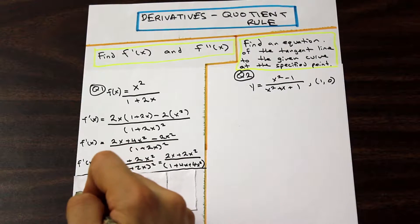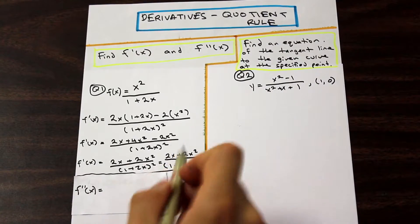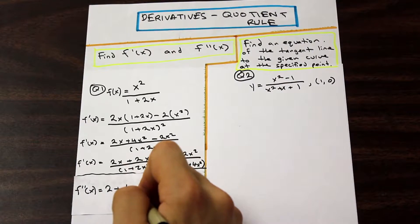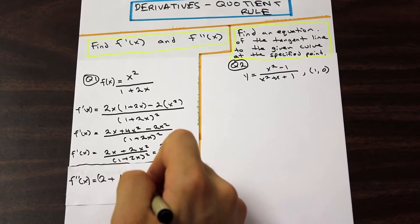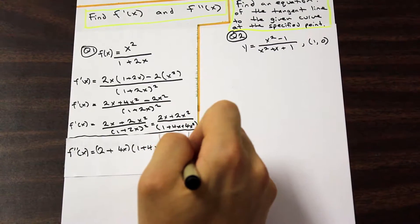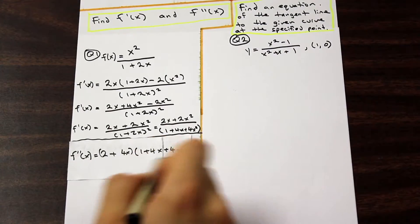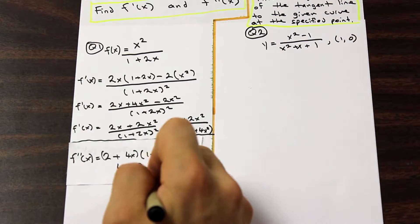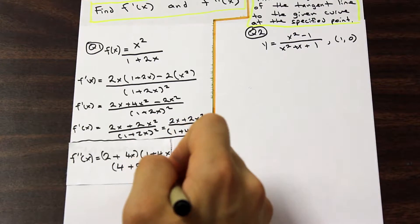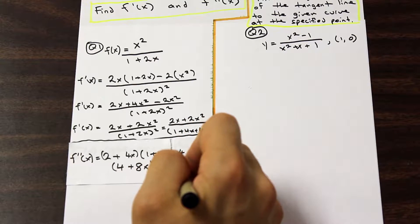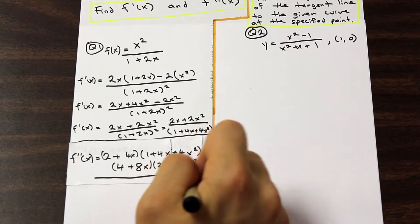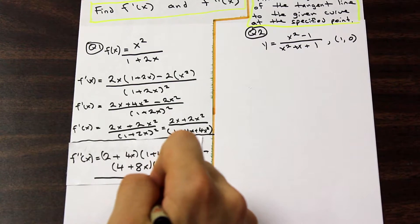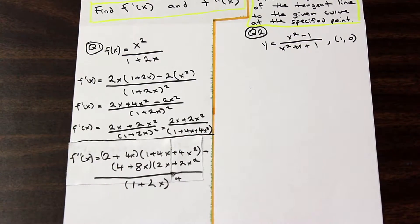So f double prime of x equals the derivative of the top: derivative of 2x is 2, plus derivative of 2x squared is 4x, times the bottom function, which is 1 plus 4x plus 4x squared, minus the derivative of the bottom — that's going to be 4 plus 8x, because we have 4x plus 4x squared — multiplied by the top of the function, 2x plus 2x squared. That is all over the bottom of the function squared: (1 plus 2x) squared, squared, so (1 plus 2x) to the power of 4.